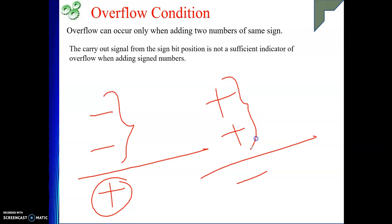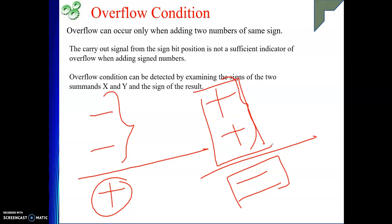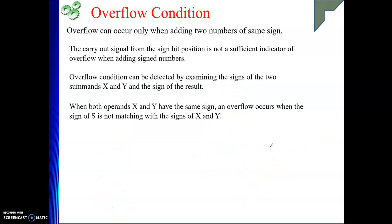Both inputs are positive but the result is negative — the sign of the result is not matching with the signs of the operands. That is an overflow condition. When both operands are of the same sign, overflow can occur when the sign of the result S is not matching with the signs of X and Y.